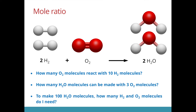To make 100 water molecules, how many of each of our reactants do we need? If I need 100 water molecules, I will need 100 hydrogen molecules because the ratio is 2 is to 2. And I will need 50 oxygen molecules because this is a 2 is to 1 ratio. So to sum up, to make 100 water molecules, I would need 100 hydrogen molecules and 50 oxygen molecules.